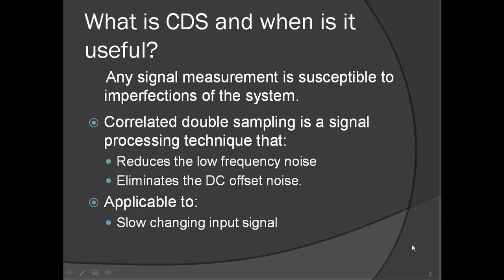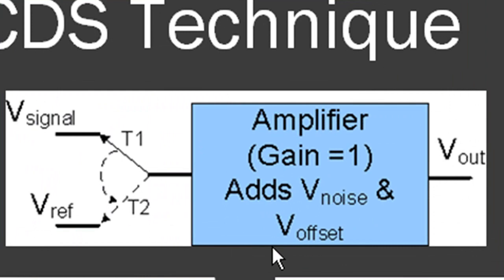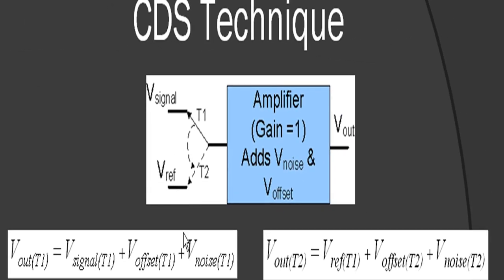The delay is to isolate the noise and offset from the signal. The signal is required to be constant between the two samples, and is thus applicable to slow-changing signals that can be assumed constant for a short duration. To understand the CDS technique, consider the offset and noise added by the amplifier in this figure to the signal and reference. The signal is represented by V-signal and the reference by V-ref, which is most commonly the ground of the system. The noise and offset get added to signal and reference at times T1 and T2 respectively.